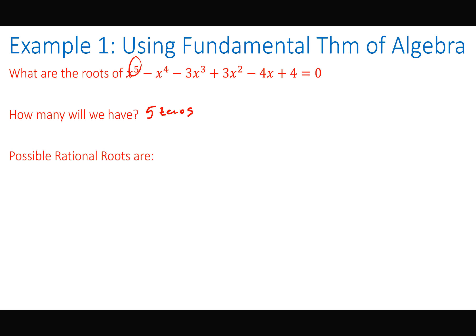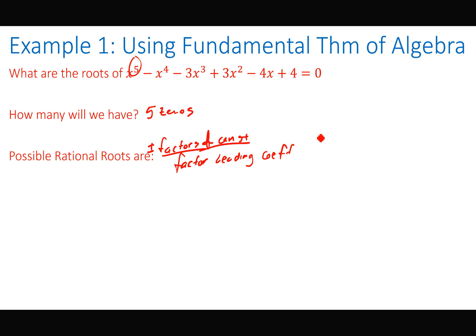What about possible rational zeros? This is from Thursday — how do I determine all those possible rational zeros? We had a template to follow: factors of the constant over factors of the leading coefficient, looking at plus or minus factors of each. My constant is 4, so I have plus or minus 1, plus or minus 2, and plus or minus 4. My leading coefficient is just 1, so plus or minus 1. So my only possible rational zeros are plus or minus 1, plus or minus 2, plus or minus 4.